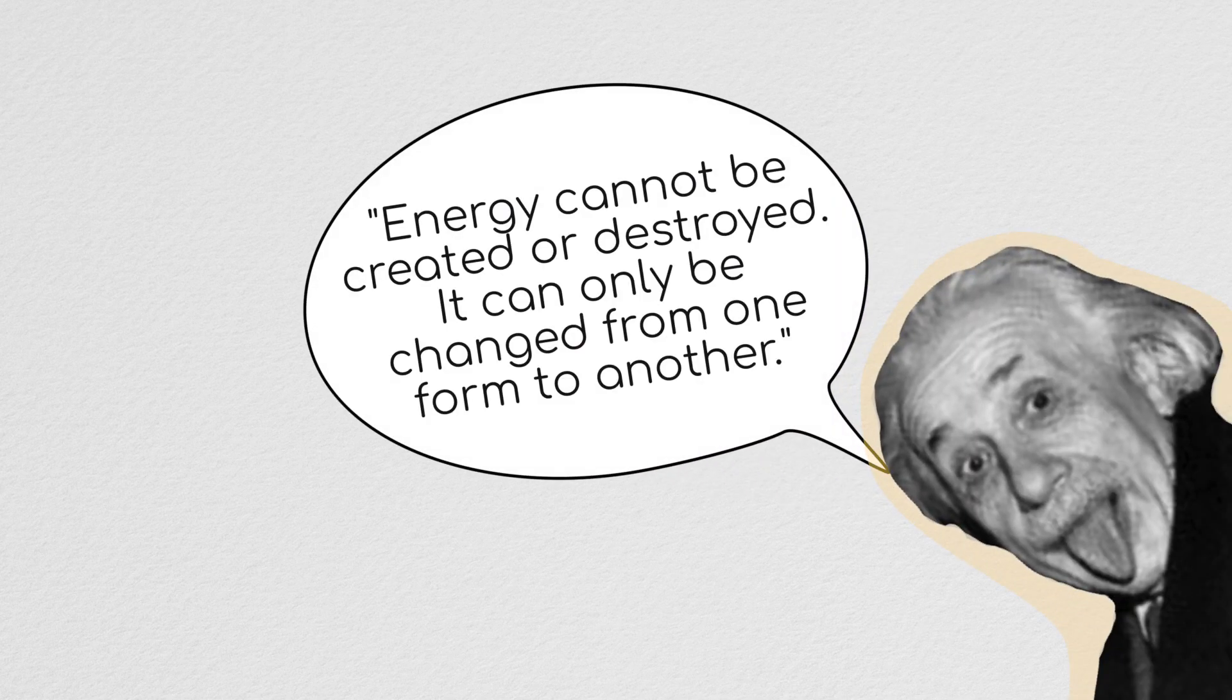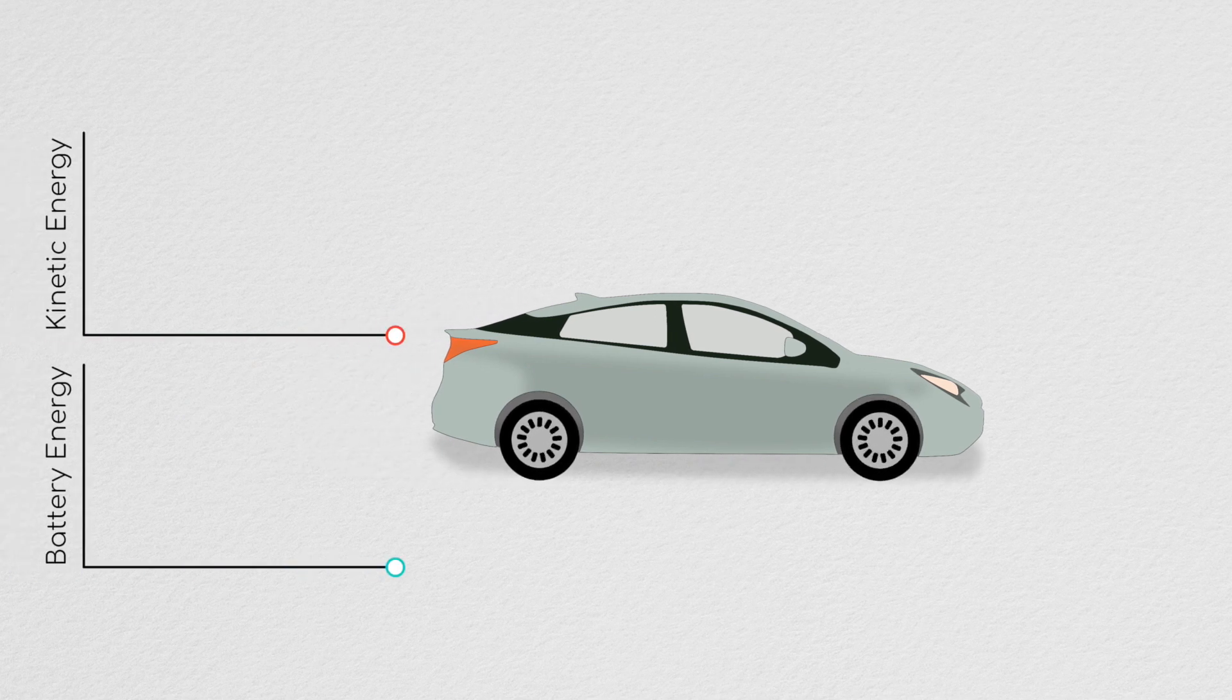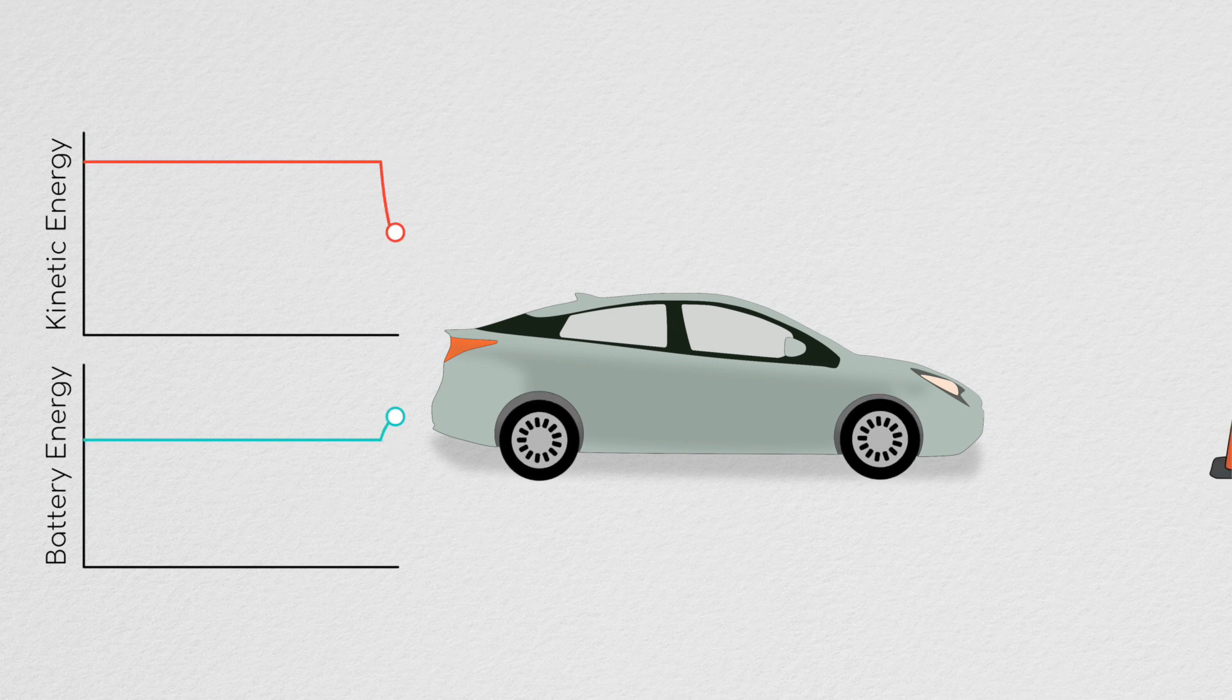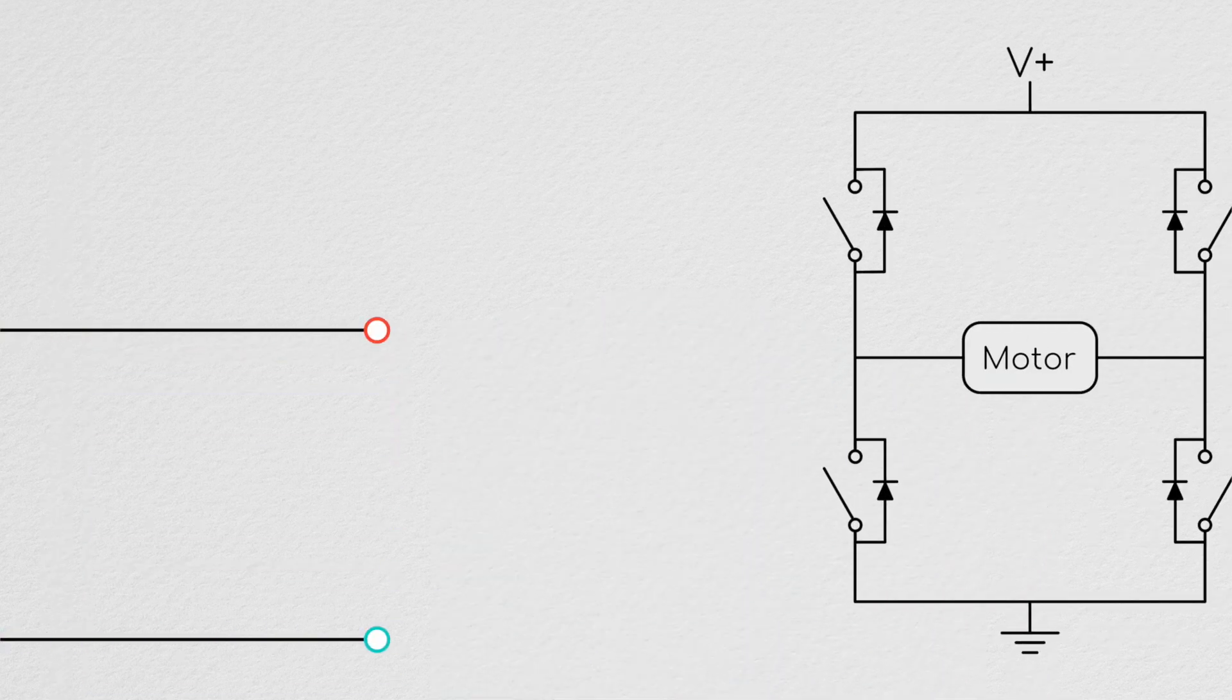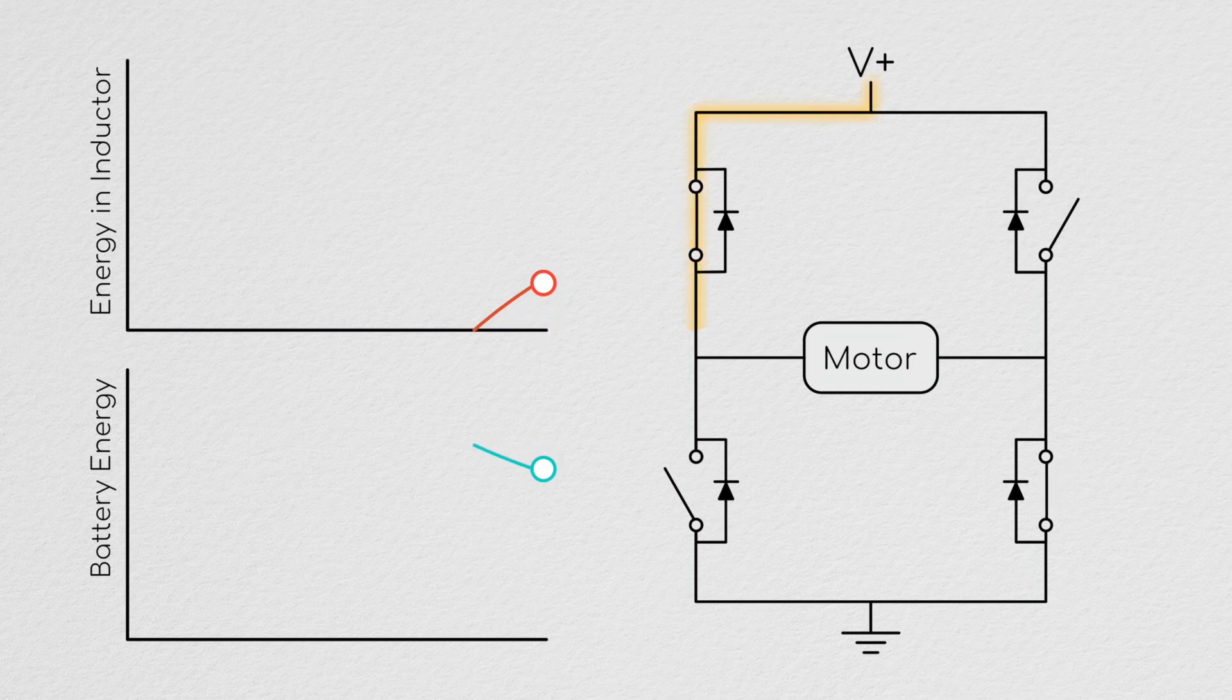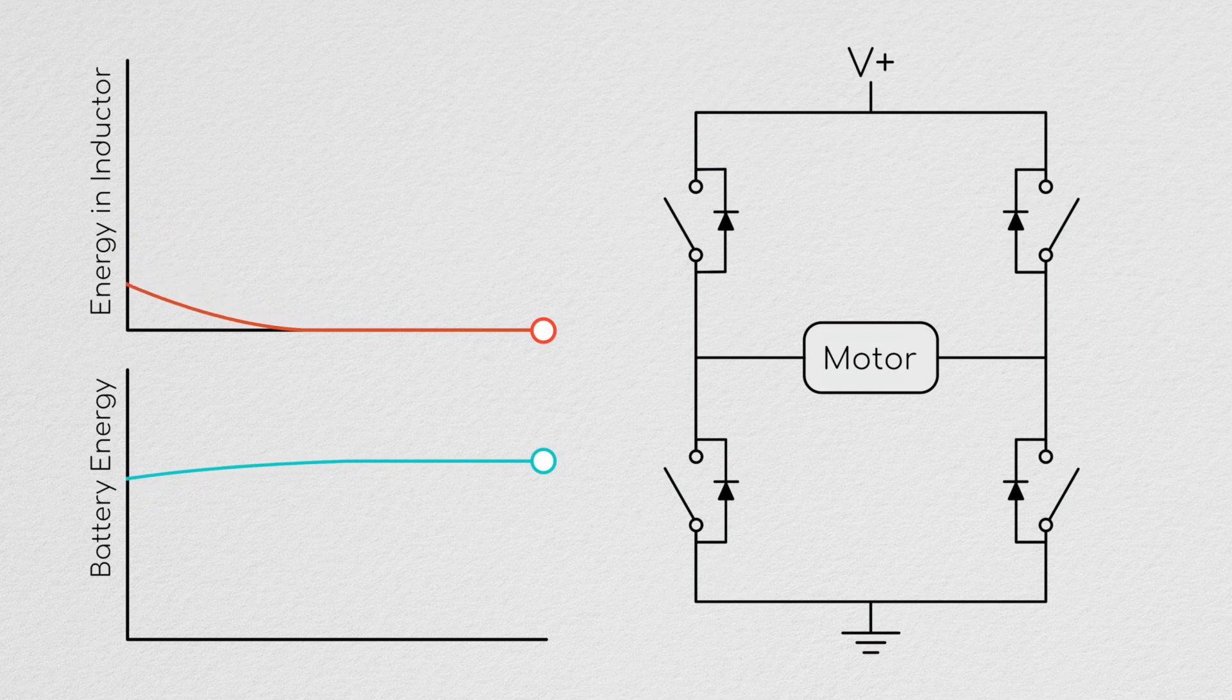We're going to talk more about regeneration in a later episode, but we'll just brush on it now. If you're pushing energy back into your battery, that energy had to come from somewhere because energy is always conserved. For example, if we look at a car like a Prius or a Tesla using regenerative braking, the energy flowing back into the battery comes from reducing the car's kinetic energy as it slows to a stop. So you're taking kinetic energy that you wanted to get rid of anyway and recapturing some portion of it.